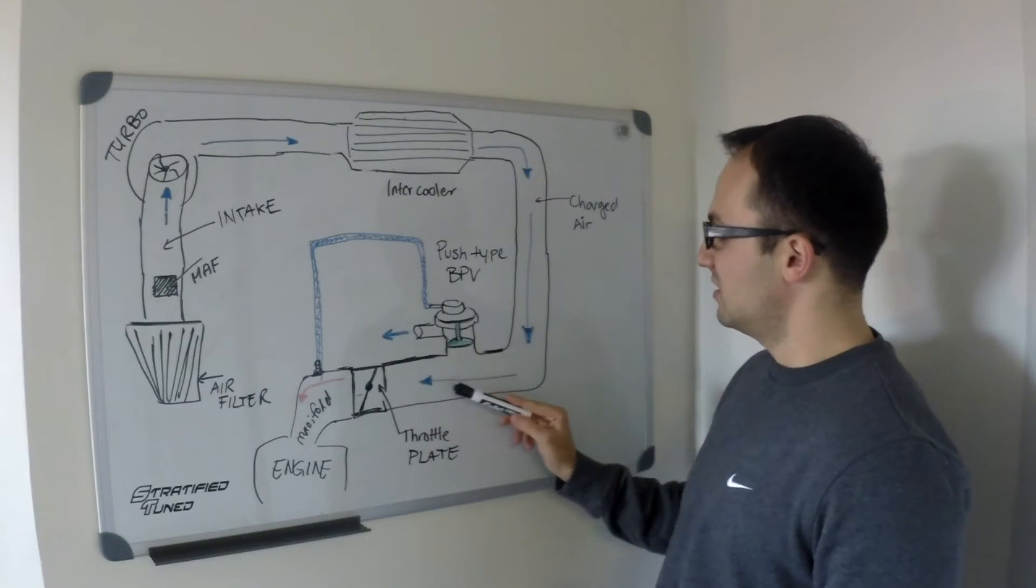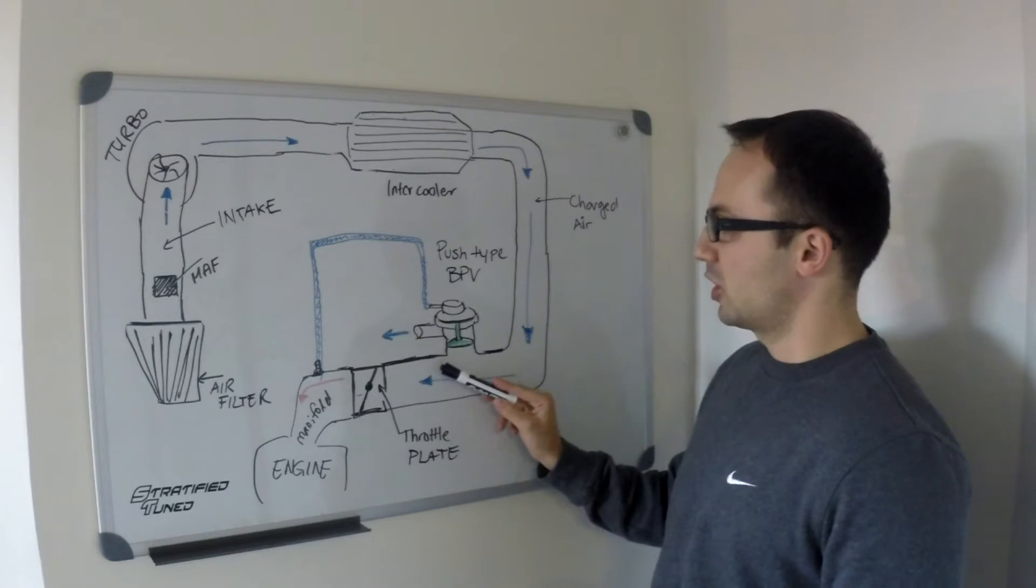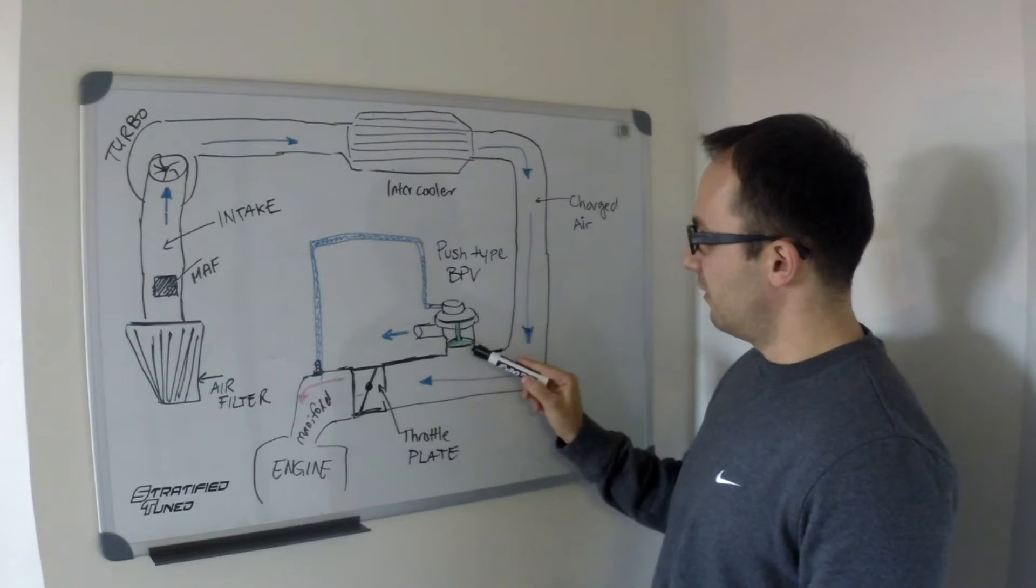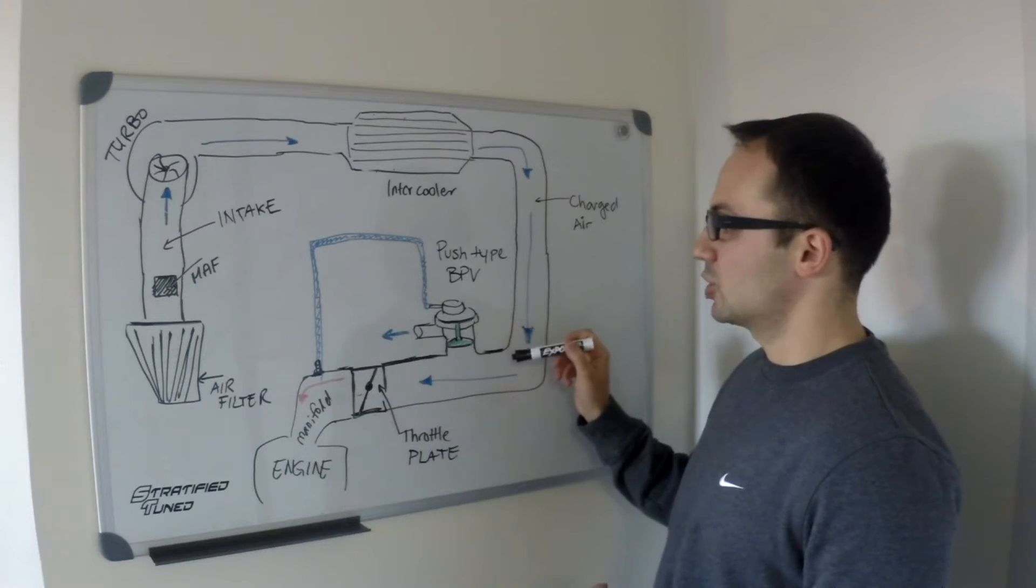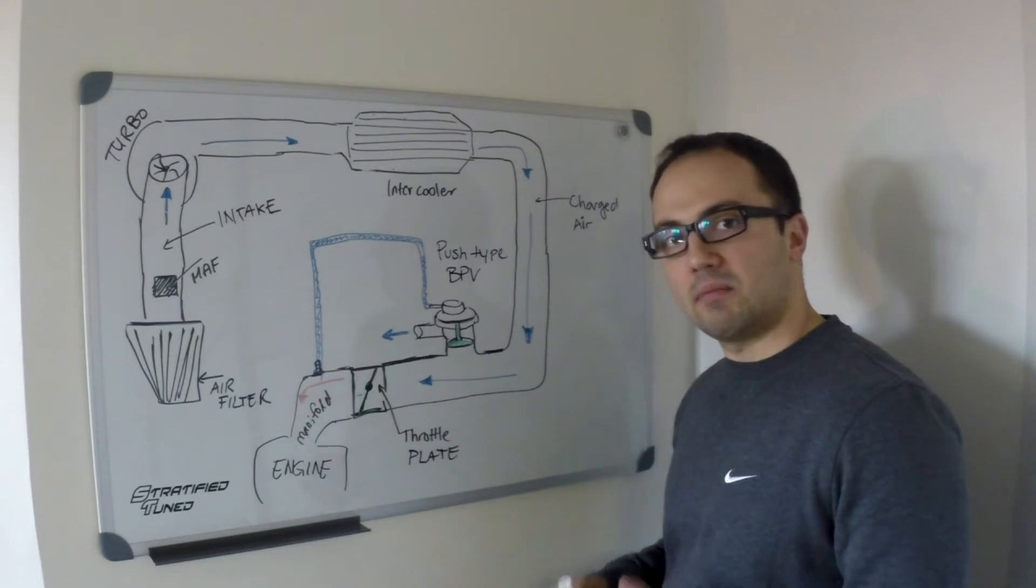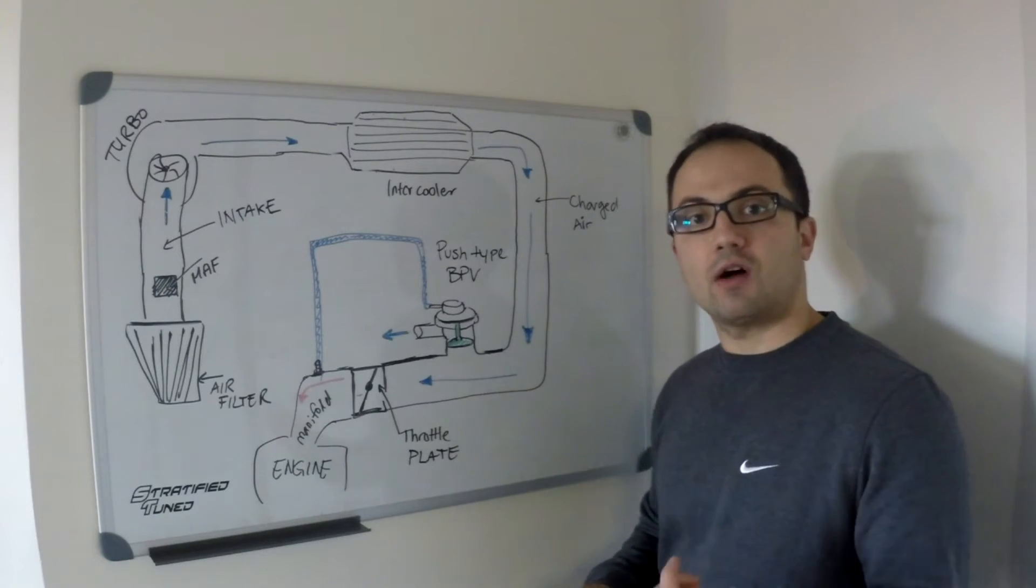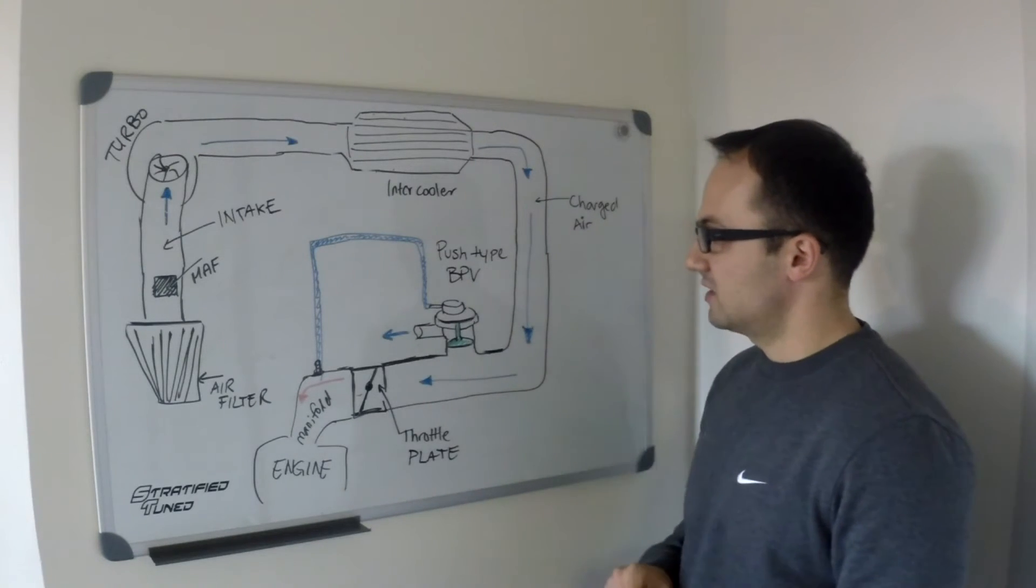And the bottom chamber sees pressure from your charge piping in front of your throttle body. So there's a valve here, and that valve is held shut under boost operation, but the valve opens and relieves excess air when you lift off the throttle. So let's see why that is important.